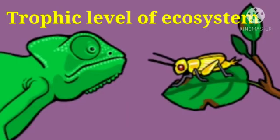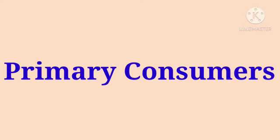Now let us see the trophic levels of the ecosystem. Primary consumers, also called herbivores, are directly dependent on autotrophs. Autotrophs means producers. All the plants in the ecosystem are producers.